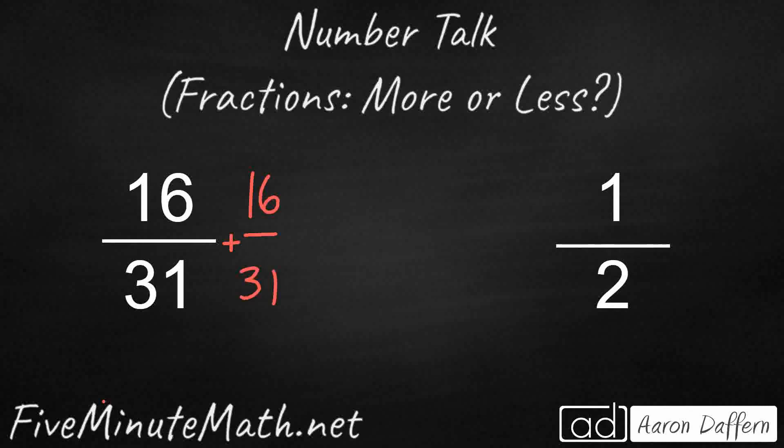So, 16 over 31 plus 16 over 31. We know that when we add fractions, we need the same denominator, and the denominator doesn't change because that's simply our unit. So, 16 and 16 make 32.